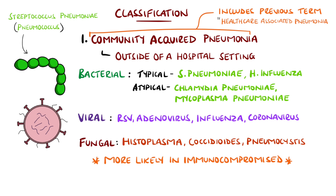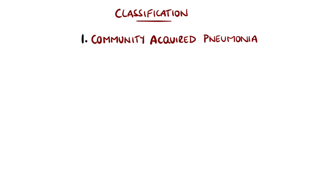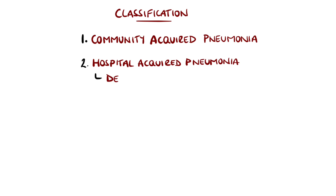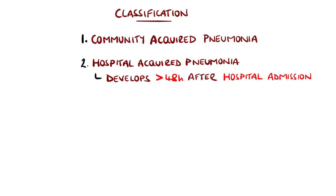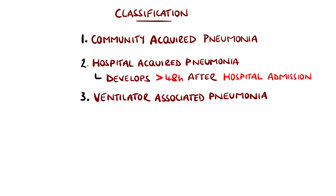Fungi can also cause CAP, but this is more common in immunocompromised people. CAP now also includes healthcare facilities like rehabilitation centers, previously categorized as healthcare-associated pneumonia. Hospital-acquired pneumonia (HAP) is defined as developing more than 48 hours after admission to hospital, and ventilator-associated pneumonia (VAP) when it develops more than 48 hours after intubation.